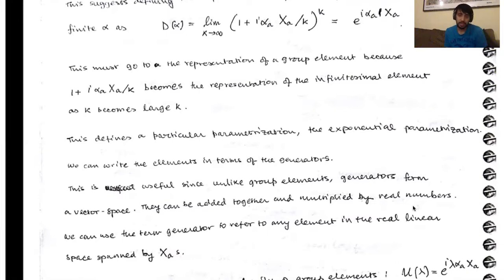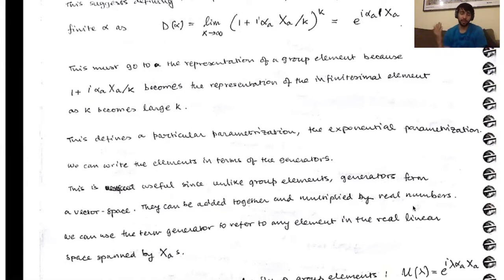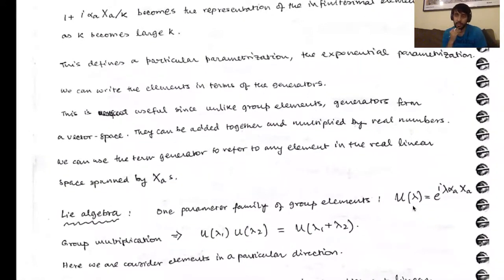This is useful because, as I write here, since unlike group elements, generators form a vector space — you can add them together, you can multiply them by real numbers. What we are going to do is refer to any element of this real linear space spanned by these X_A's as a generator. Not only the basis elements X_A themselves, but any element of this vector space can be called a generator of the group. This exponential map is actually very useful.